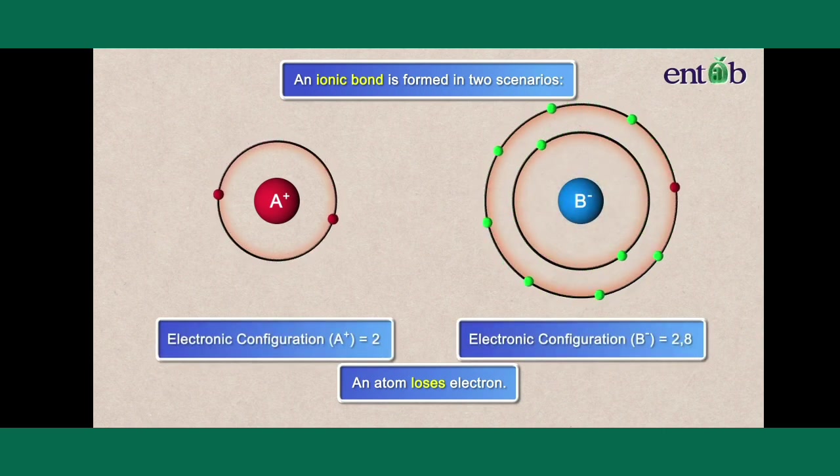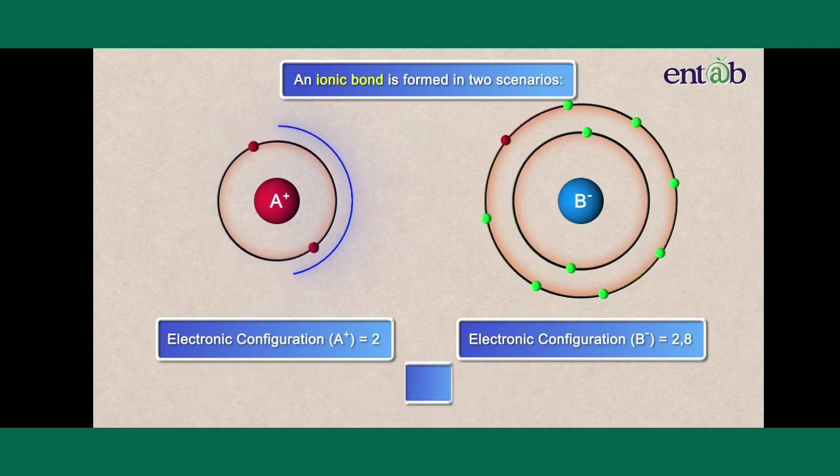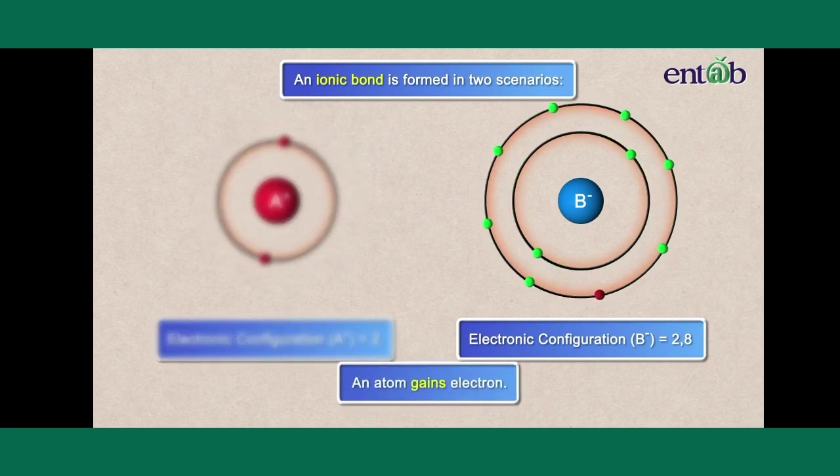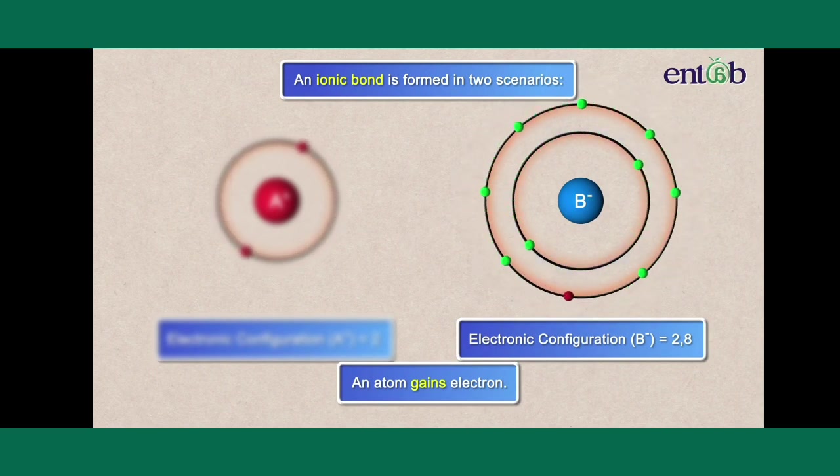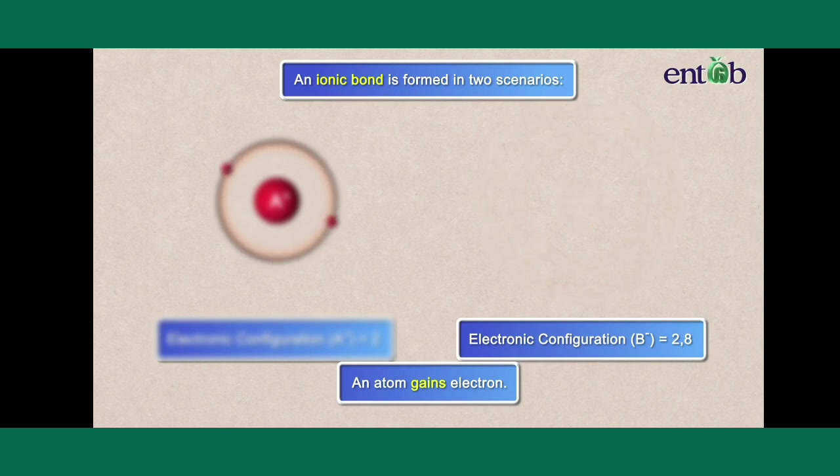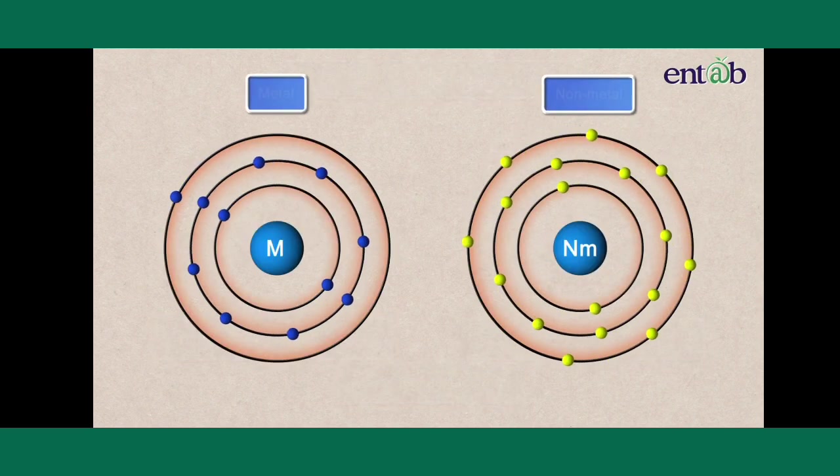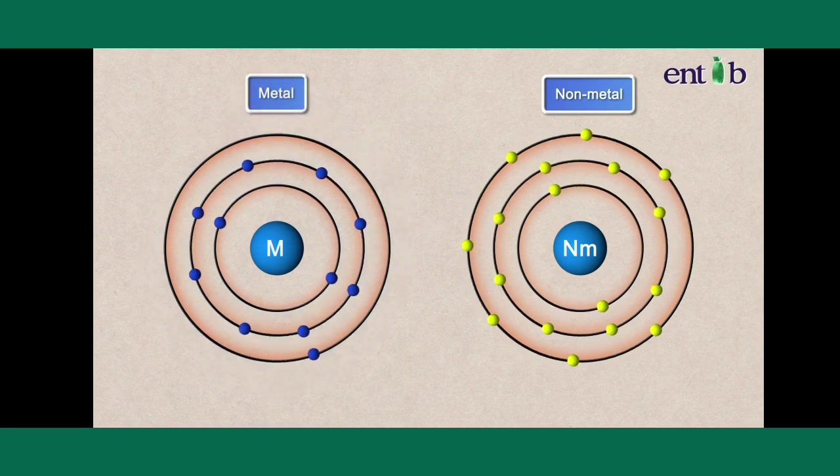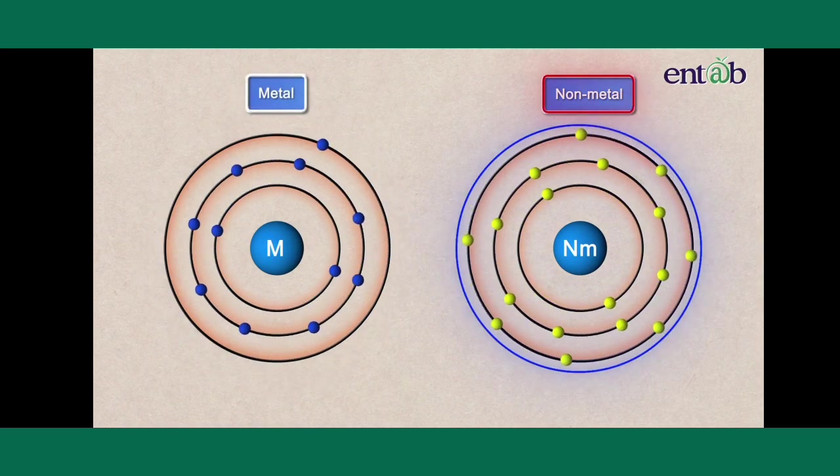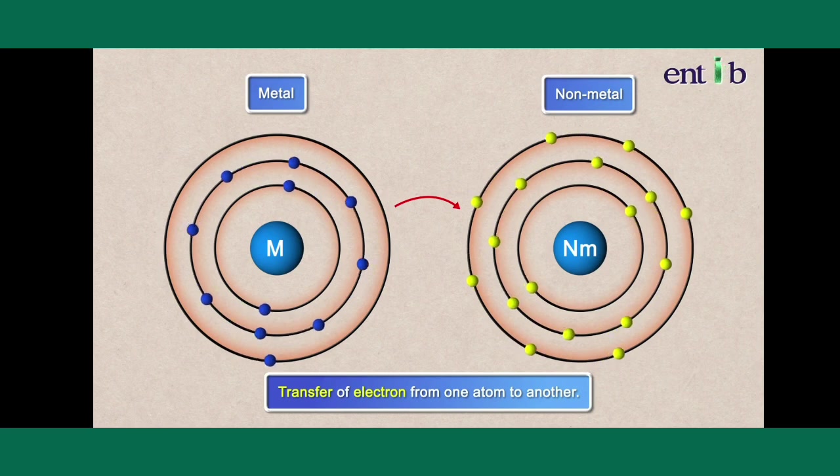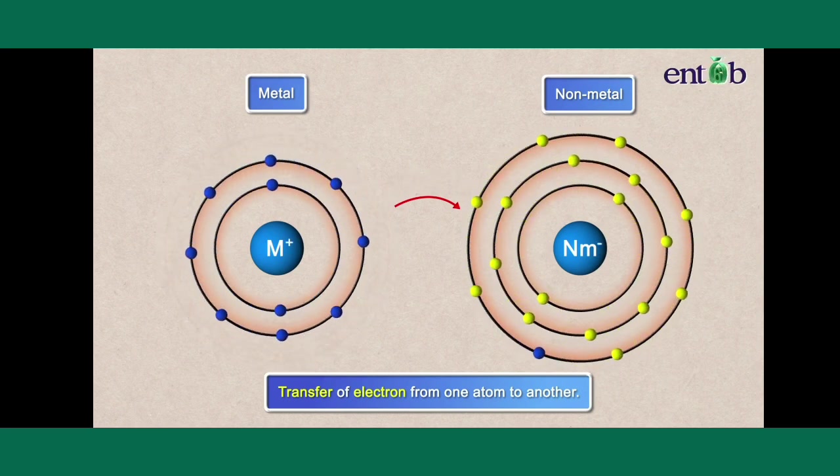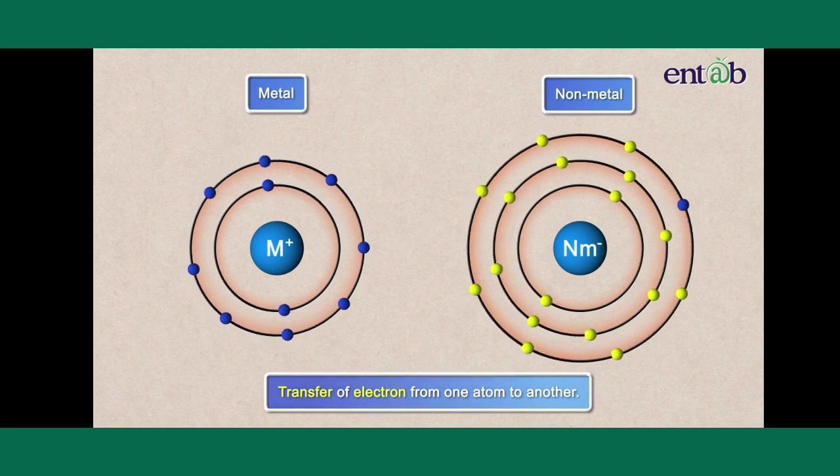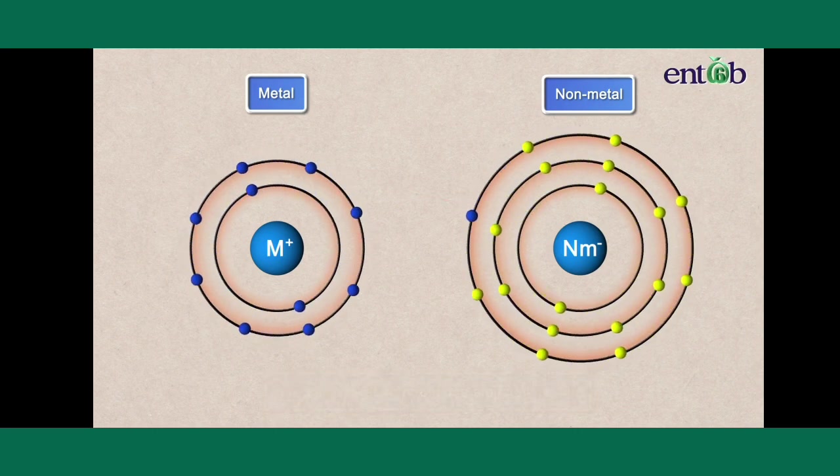When the other atom gains electrons and forms a negative ion to achieve the electronic configuration of the noble gases. When a metal reacts with a non-metal, transfer of electrons takes place from the atoms of the metal to the atoms of the non-metal. And thus an ionic bond is formed.